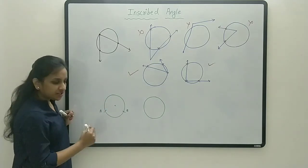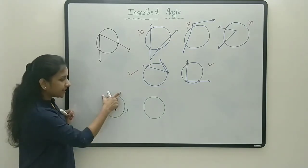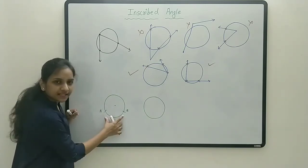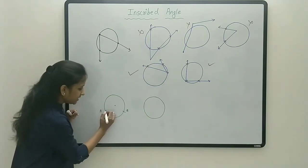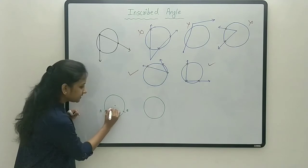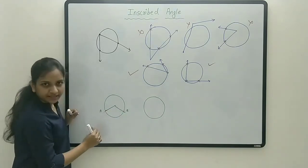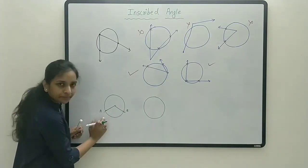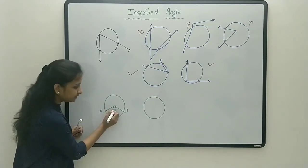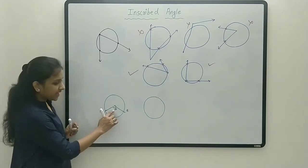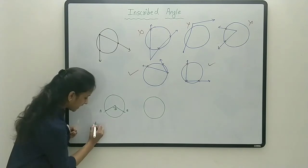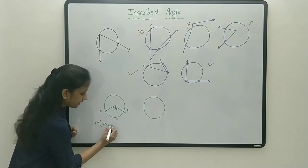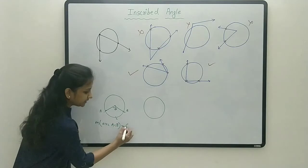Now let's see the measure of the small arc and the big arc. The measure of an arc is the angle subtended by that arc at the center. So for this small arc, if this central angle is theta, then arc ACB has measure theta degrees.